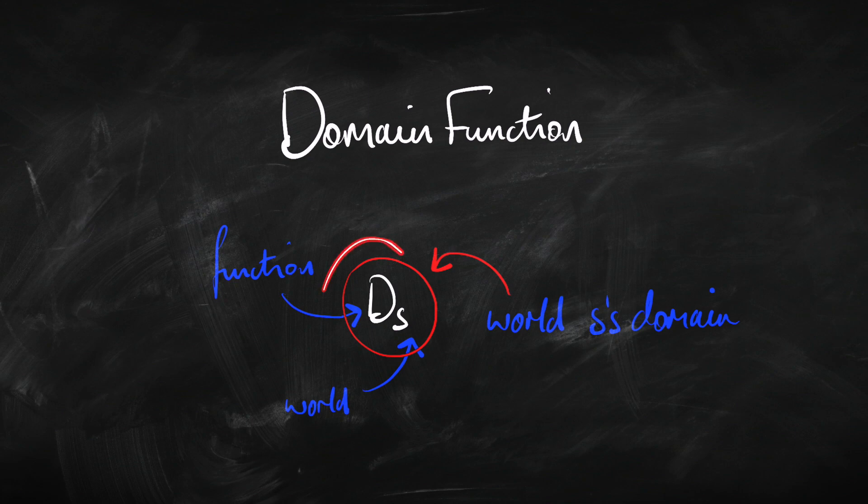In a variable domain model, what we're allowing is that the output of this function can be different for different inputs — for different possible worlds, this function will give us a different output. So, when we move from a constant domain model to a variable domain model, what else changes? Well, in fact, not a lot. The box, the diamond, they both mean the same thing. And, or, not, if-then, if-and-only-if — they mean the same thing. But the quantifiers are going to change slightly.